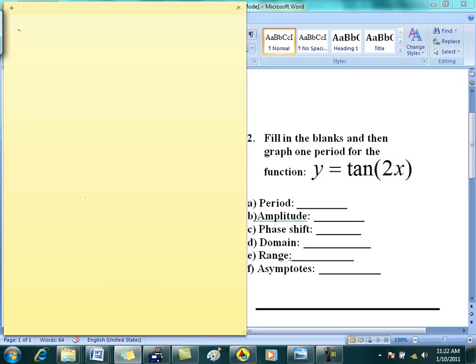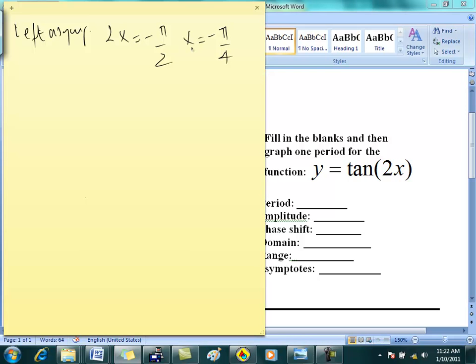So your left asymptote is going to be obtained by taking 2x and setting it to -π/2 so that you get x equals -π/4. That's your left asymptote. Okay?